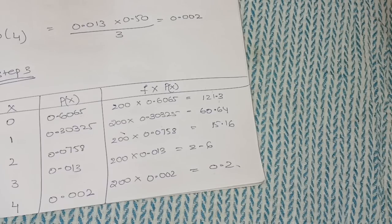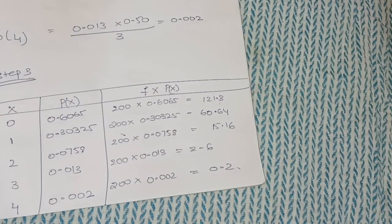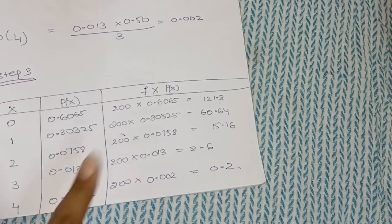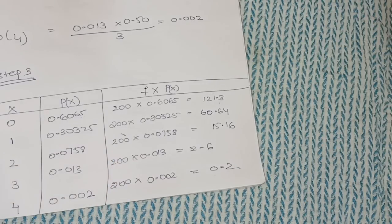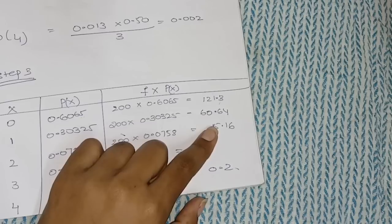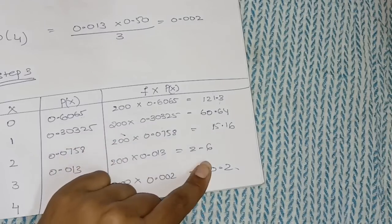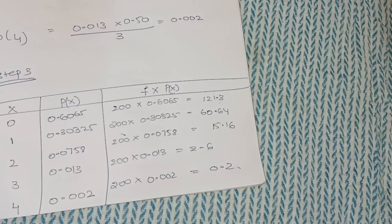To summarize: Step 1 — find lambda. Step 2 — use the Poisson distribution table to find e^(-m), then calculate P(0), P(1), P(2), P(3), P(4). Step 3 — prepare the final table with x column, P(x) column, and f × P(x) column. f is the total frequency 200. Adding 123.3 + 60.64 + 15.16 + 2.6 + 0.2 gives 200. That is called Poisson distribution.